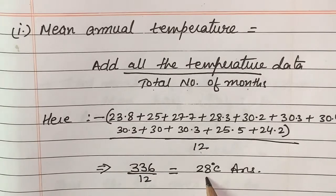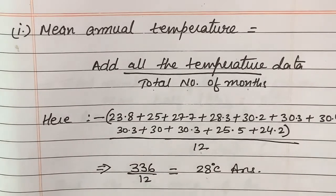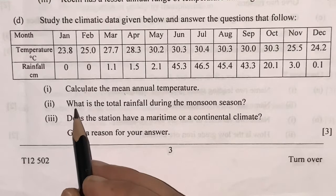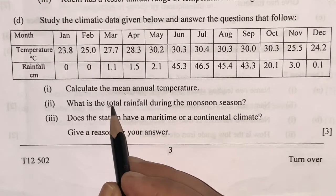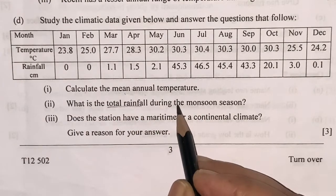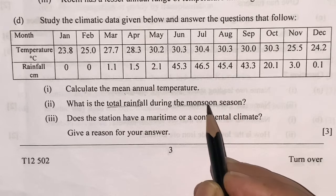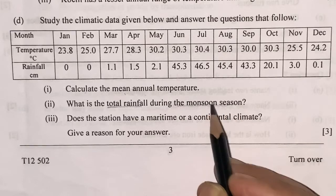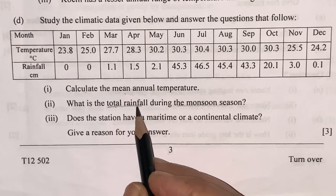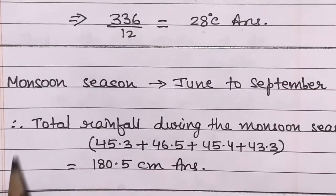And you will get the answer 28 degrees Celsius. Second question is what is the total rainfall during the monsoon season? You have to see the monsoon season has been mentioned here and total rainfall. First you will see the monsoon season.